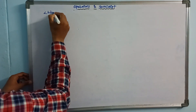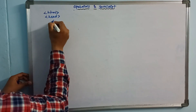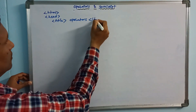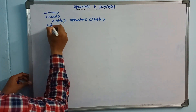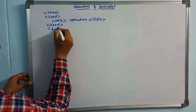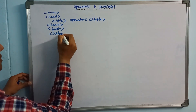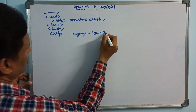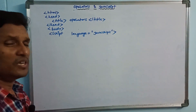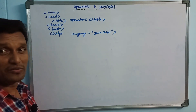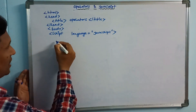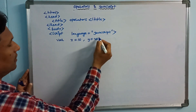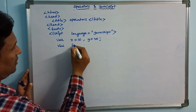Now let us look at the code. First, HTML tag, then head section, title, close title, close head section. Next, body section. Inside body, we add a script tag with language equal to JavaScript. Here we will demonstrate arithmetic operators and relational operators. We declare two variables: x equal to 10, y equal to 20. Also s1 and s2 as string variables.